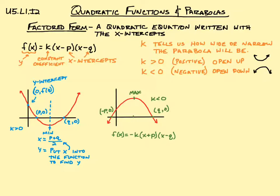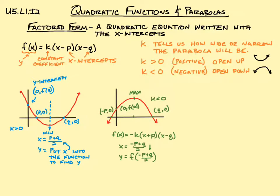Since k is less than zero, the parabola opens down, so we're going to have a maximum point right in the middle of the x-intercepts. We can always find the maximum by finding the average of the two x-intercepts, just like before. Then the y value is found by plugging that x value into the function. We can't forget about the y-intercept as well — when x is zero, f of zero gives us the y value.